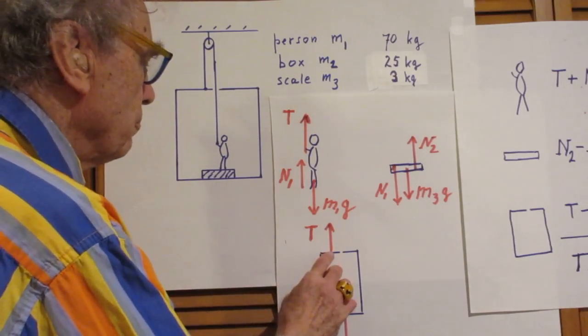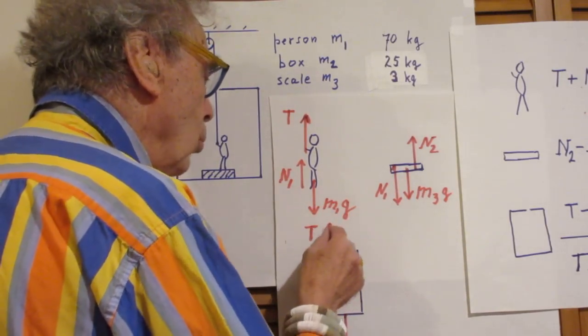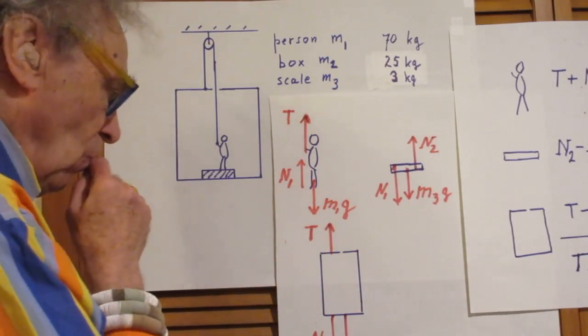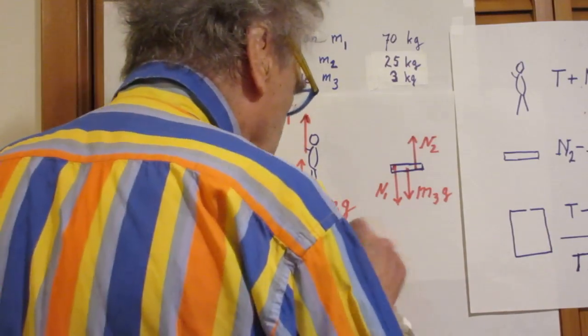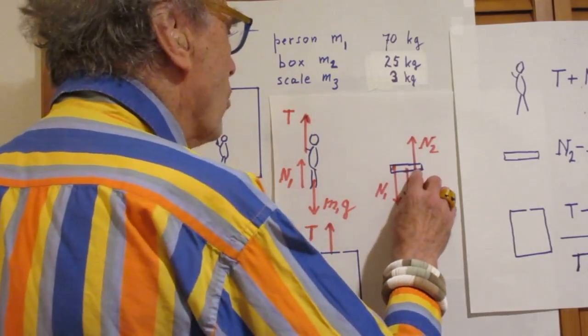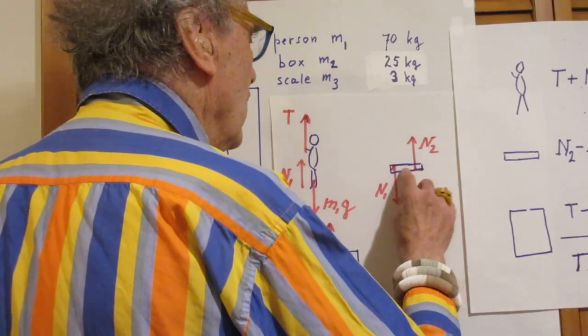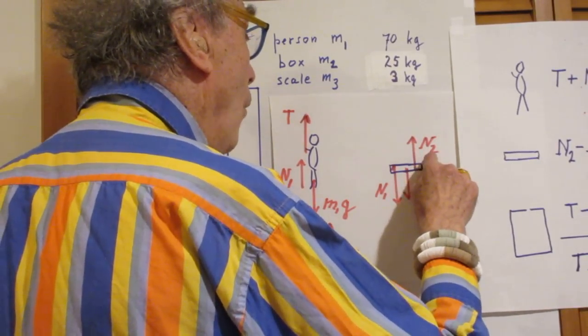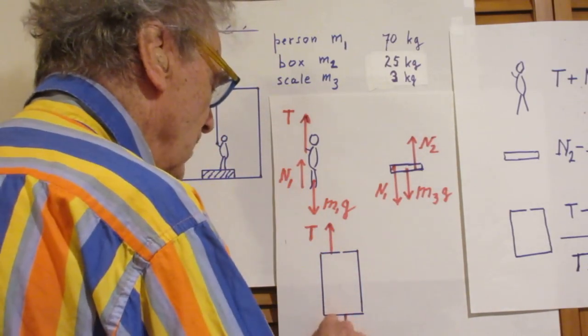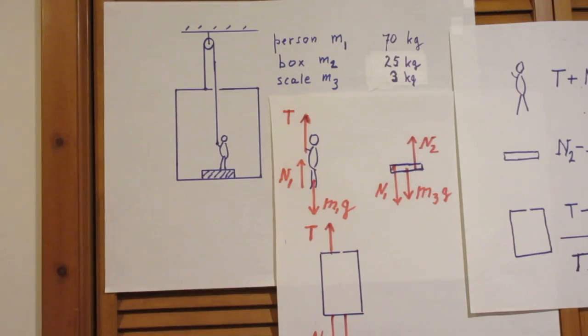Let's now go to the box. Right here, the string cable pulls upwards on the box with the tension T. The gravitational force down on the box is m2g. Now, since the box is pushing upwards on the scale with a normal force N2, the scale must push down on the box with N2. And so here you see N2 down. This is at the heart of the whole problem.